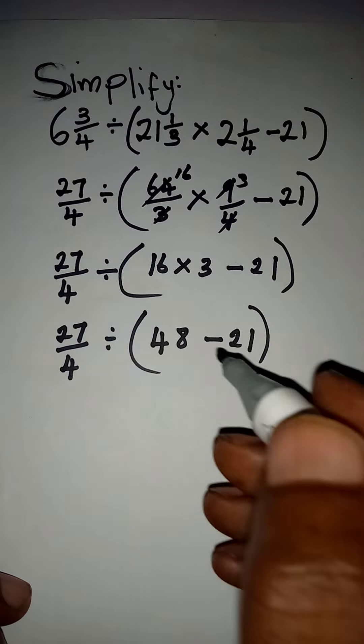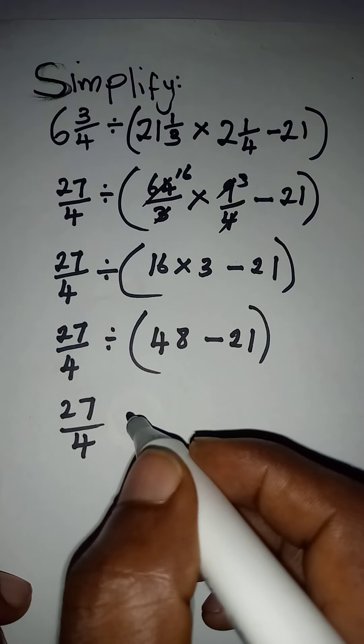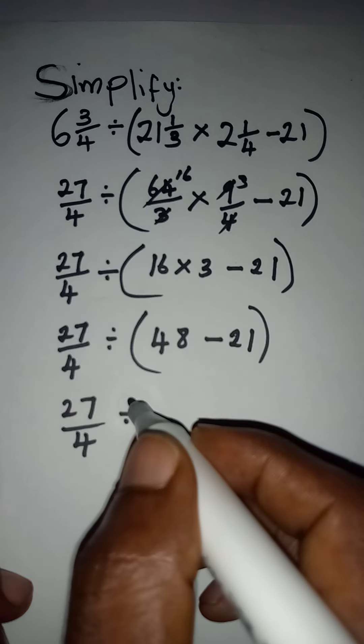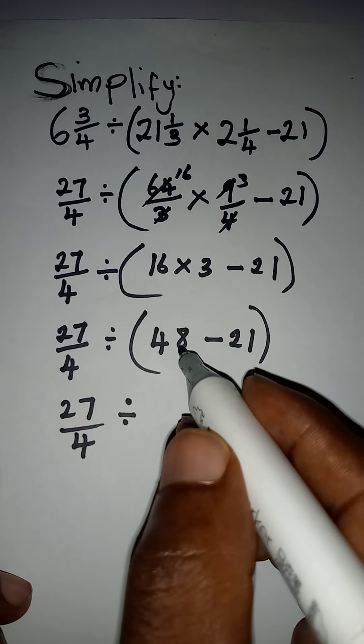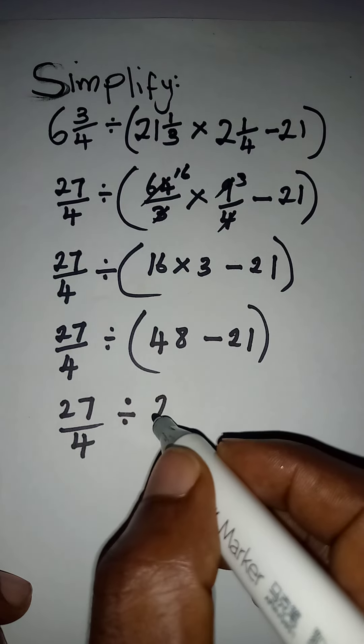Now to deal with the bracket again, I will have 27 over 4 then divided by 48 minus 21, is going to give us 27.